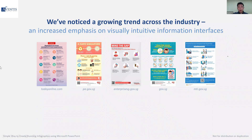Looking at the examples here, you'll notice that a lot of them are from government agencies or newspapers. In the past few months because of COVID-19, a lot of agencies and media agencies have taken to publishing these sort of PSA public announcements to raise awareness on the do's and don'ts with regards to what you can do when you're outside. This is a good example showing that the government sector is also adopting the use of infographics.